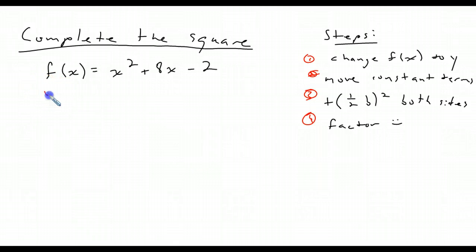So first step, change f of x to y so I can go ahead and say that this is y equals x squared plus 8x minus 2. And then move the constant term. My only constant term in this one is the minus 2, so I'm going to move that to the other side by adding it. So I have y plus 2 equals x squared plus 8x.